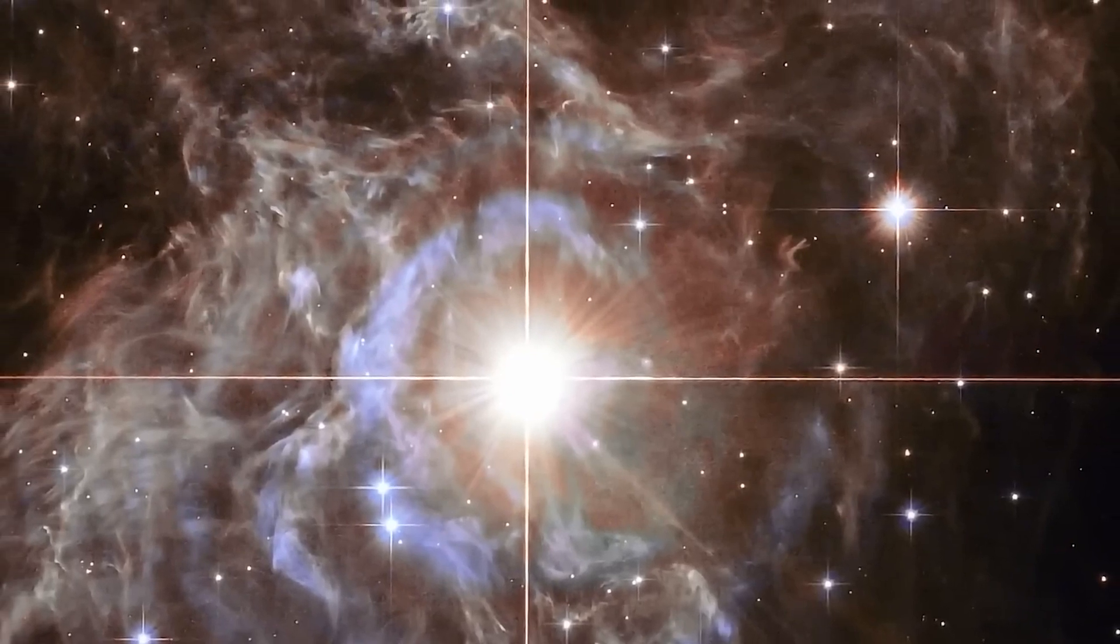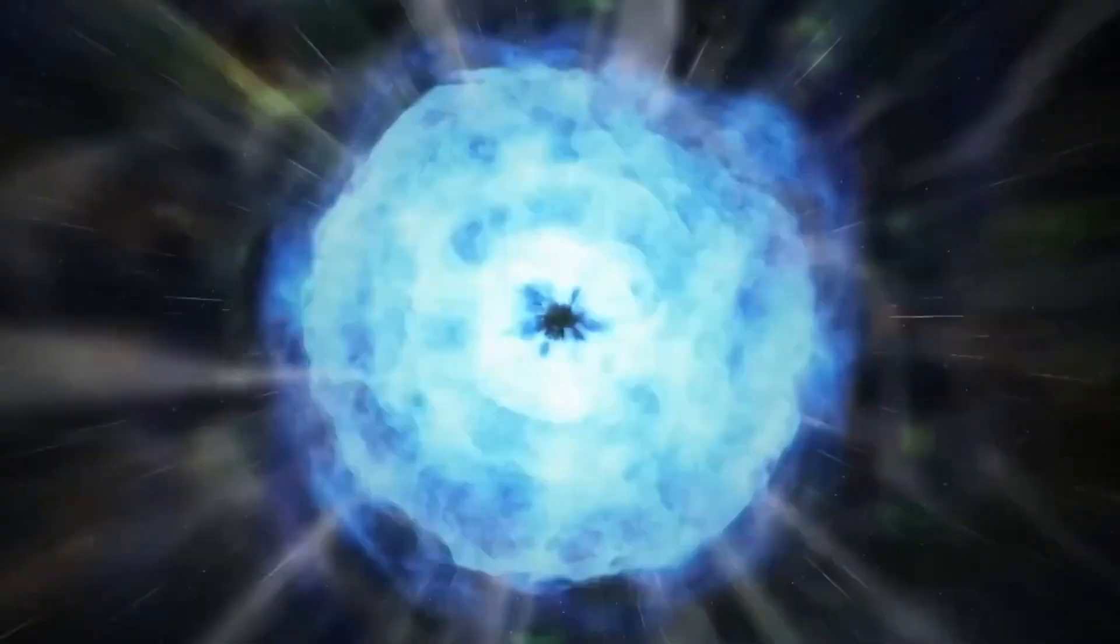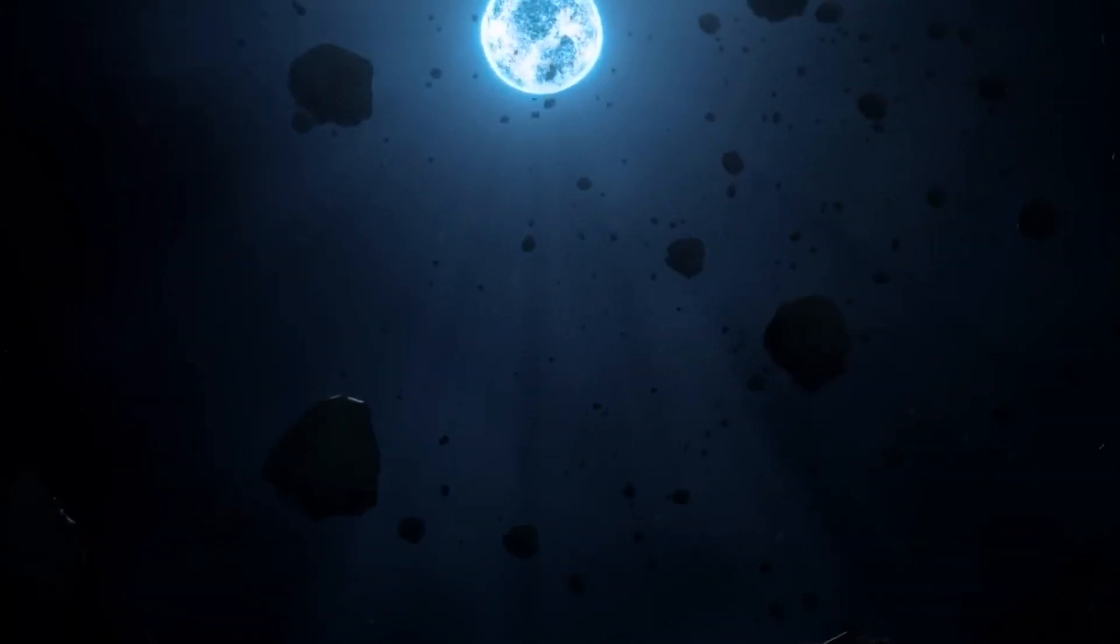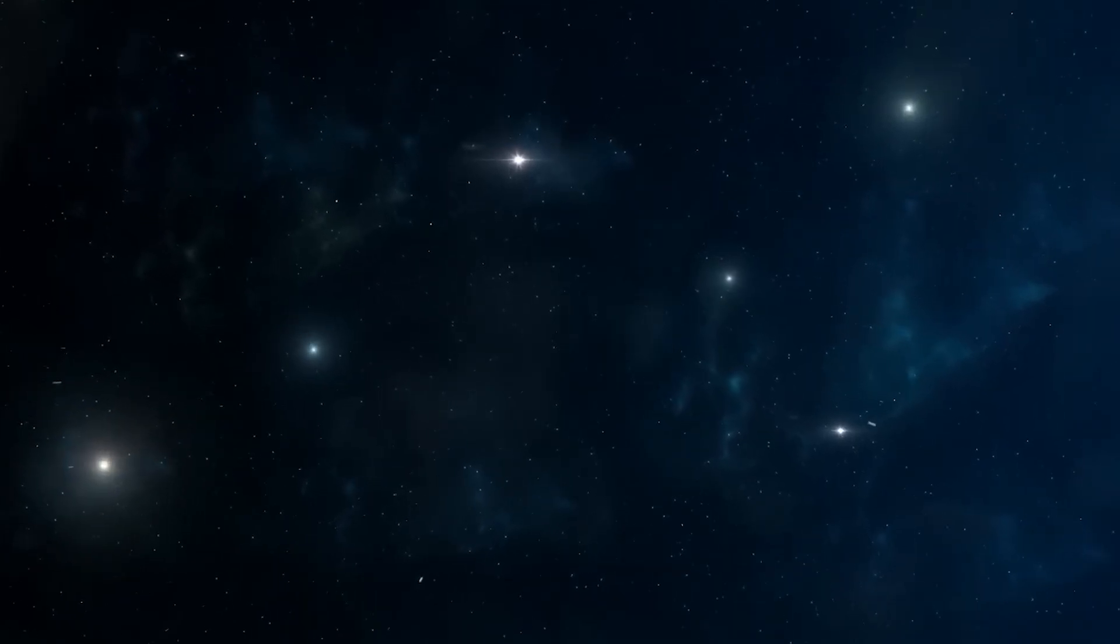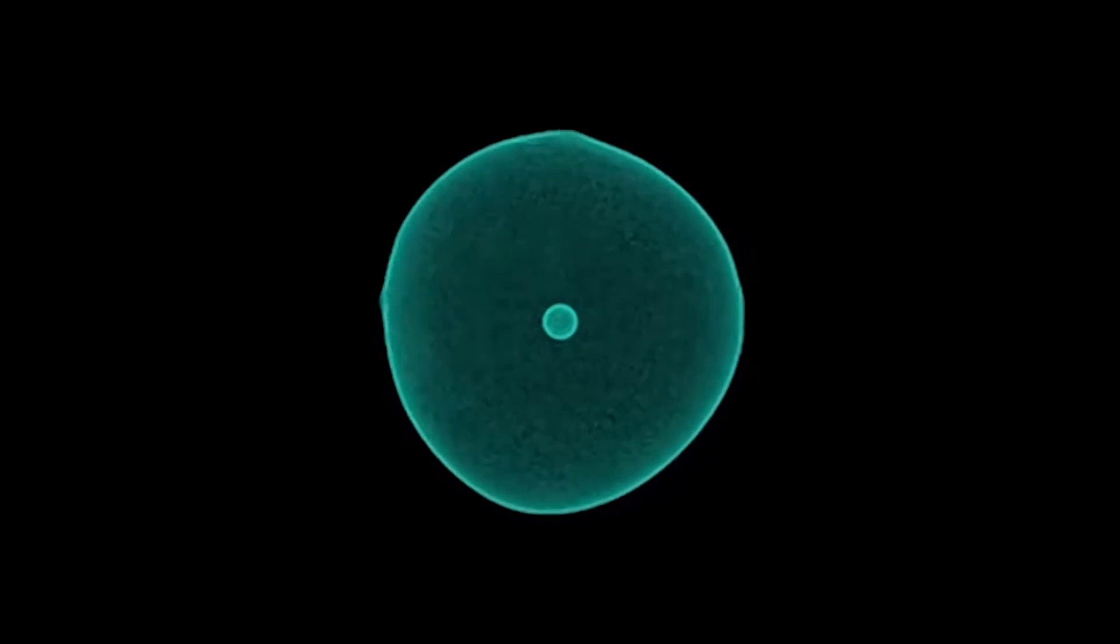This phase sees a dramatic increase in energy output before reaching a catastrophic explosion. If Polaris were to experience a supernova, we would surely witness an amazing event in our sky. The star would become incredibly luminous, eclipsing even the brilliance of the moon and becoming one of the brightest objects in the night sky. This luminous spectacle could last for days, weeks, or even months.